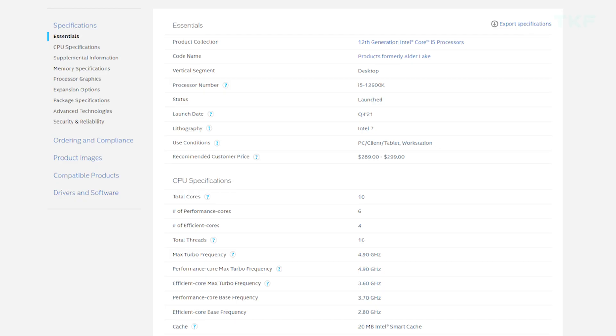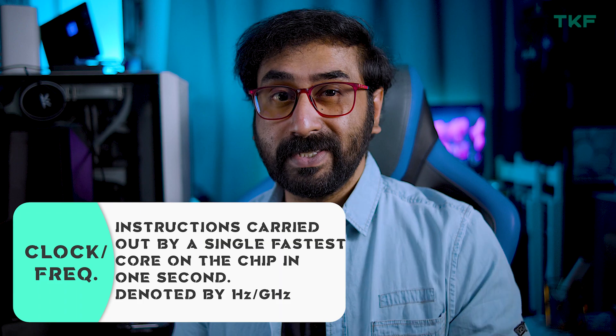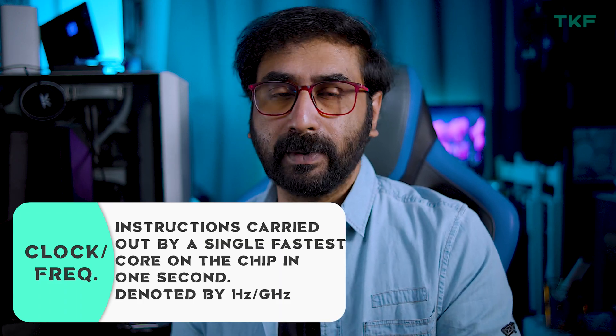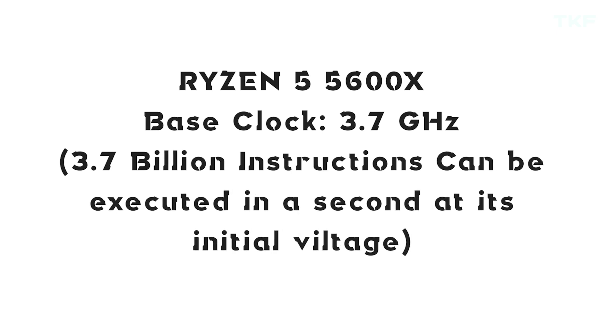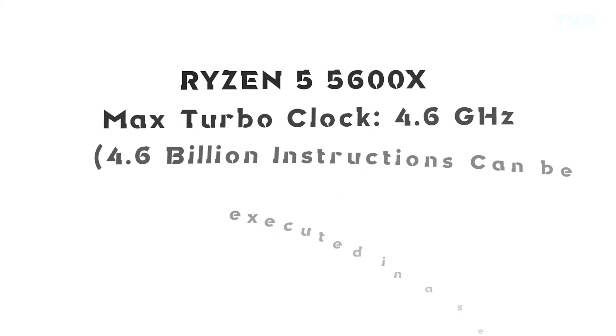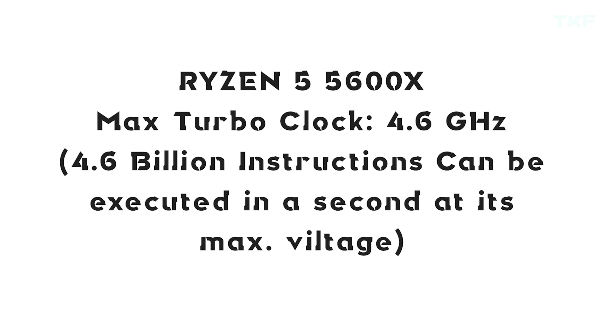Next is clock speed, or frequency. For example, AMD specs list base and maximum boost clock; Intel uses base, turbo frequency, and max turbo frequency. These are essentially two different names for the same concept — the processing speed. Simply put, it is how many cycles one core can complete per second. 1 GHz, 2 GHz, 3 GHz — for example, the Ryzen 5 5600X has a base clock speed of 3.7 GHz and a maximum boost clock of 4.6 GHz, meaning it can execute up to 4.6 billion instructions per second at maximum power.